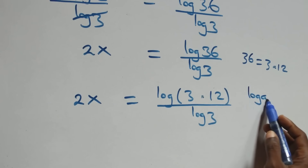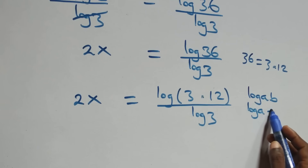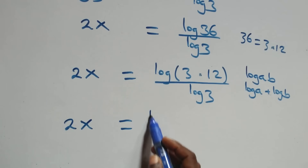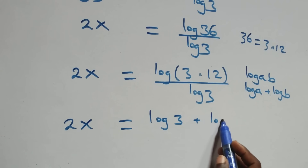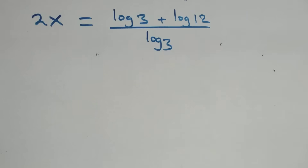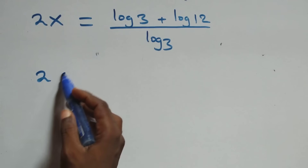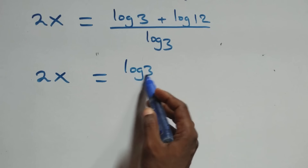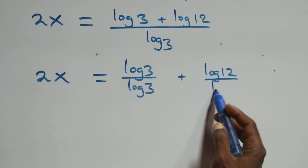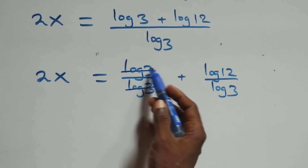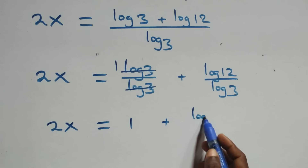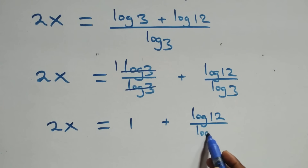This follows the law of logarithm where log(a times b) is the same thing as log a plus log b. So we have 2x equals to (log 3 plus log 12) over log 3. Here log 3 over log 3 cancels to give 1, which implies 2x equals to 1 plus log 12 over log 3.